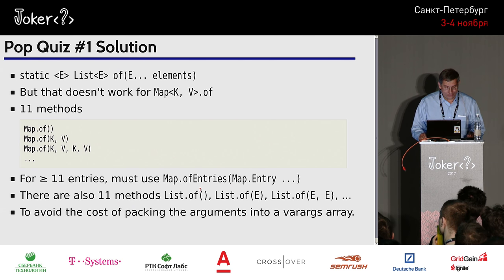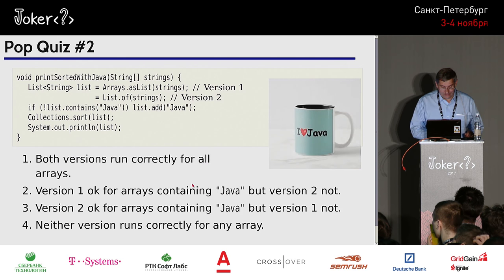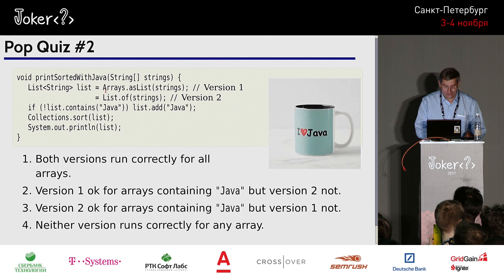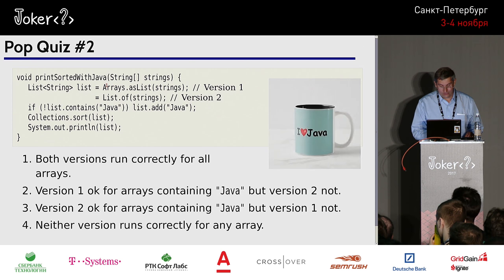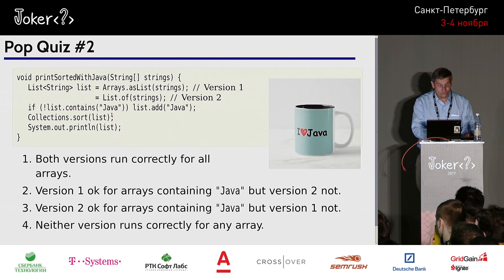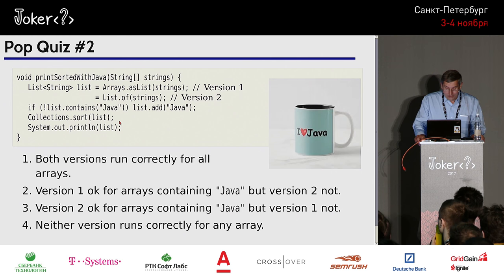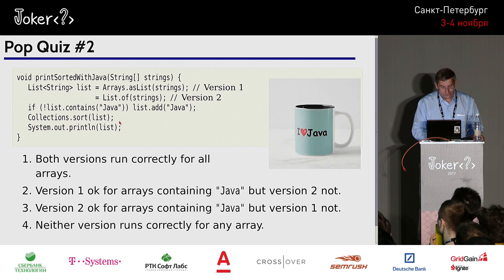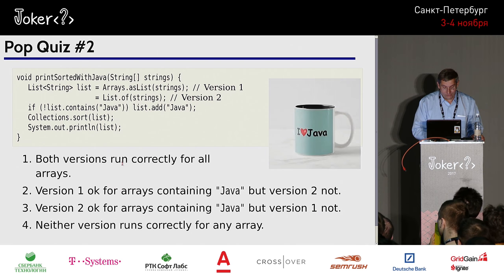Now we have these literals and we'll be using them with wild abandon. Let's probe the difference between List.of and Arrays.asList. We have two versions of a function. If the list doesn't contain Java, we add Java to it, then sort it, and print the result. Do both versions work correctly? Maybe Arrays.asList is okay for arrays containing Java. Or maybe List.of is okay. Or maybe neither works.